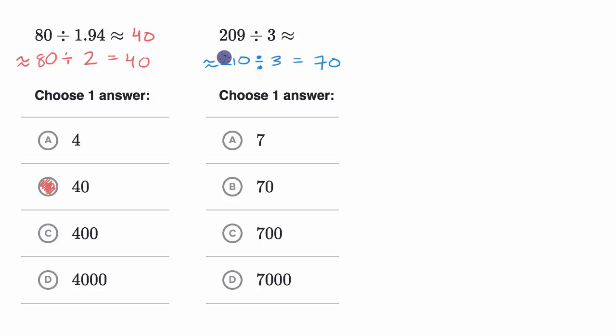So once again, 209 is pretty close to 210. Remember, we're just estimating. And so 209 divided by three would approximately be equal to 70, which is that choice right over there.